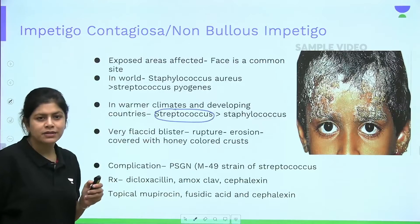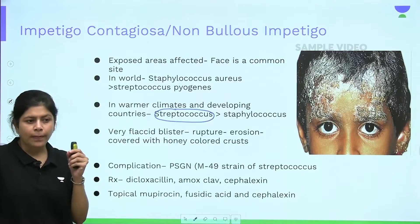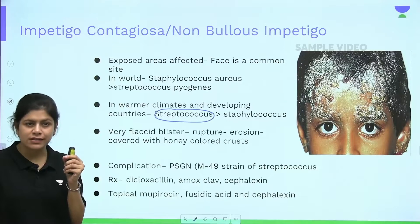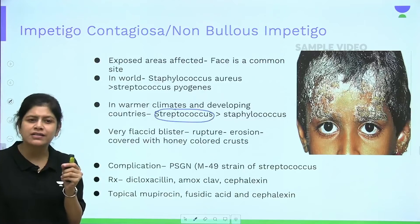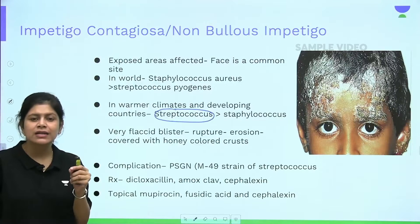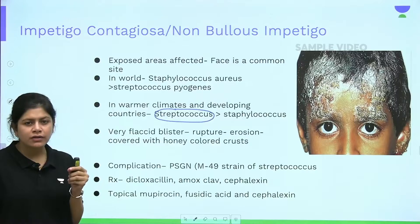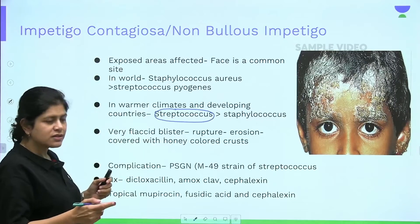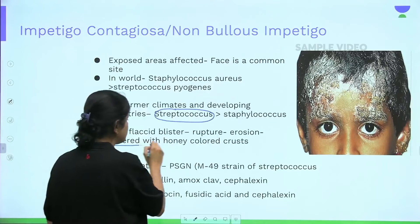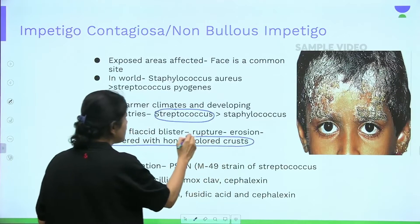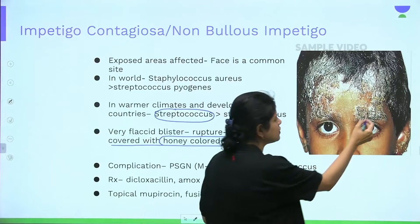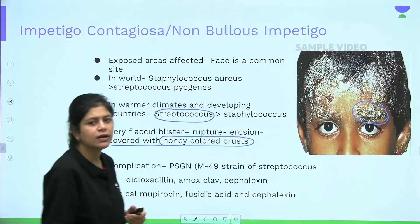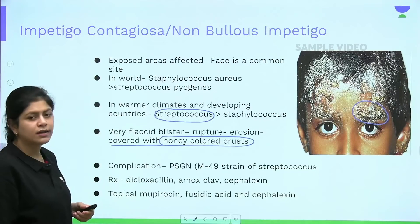The initial lesion is usually a vesicle, which is very transient. Within a few hours, the vesicle ruptures, forms an erosion, and this erosion gets covered with a honey-colored crust. This honey-colored crust, visible in the image, is the classical hallmark for diagnosis of impetigo contagiosa.